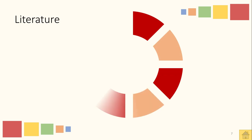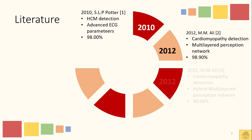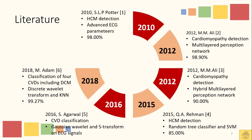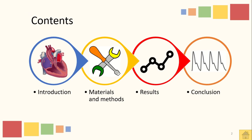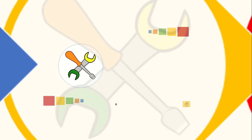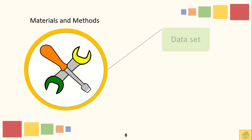An extensive literature survey was performed revolving around the detection of heart diseases using various techniques. Some of the papers closely related to this study are shown in this slide. As you can see, not much work has been done on the detection of dilated cardiomyopathy, and the papers that are already present are based on detection of cardiomyopathies or hypertrophic cardiomyopathy, which is a different type of cardiomyopathy.